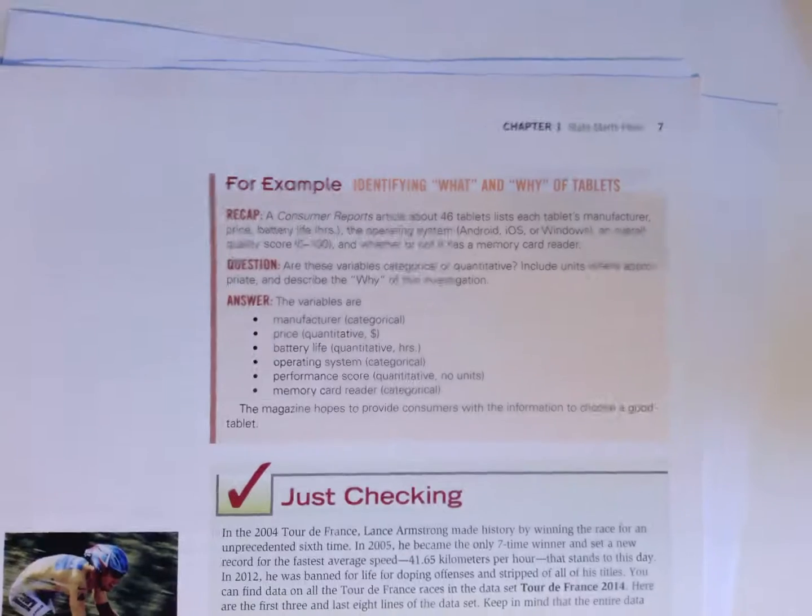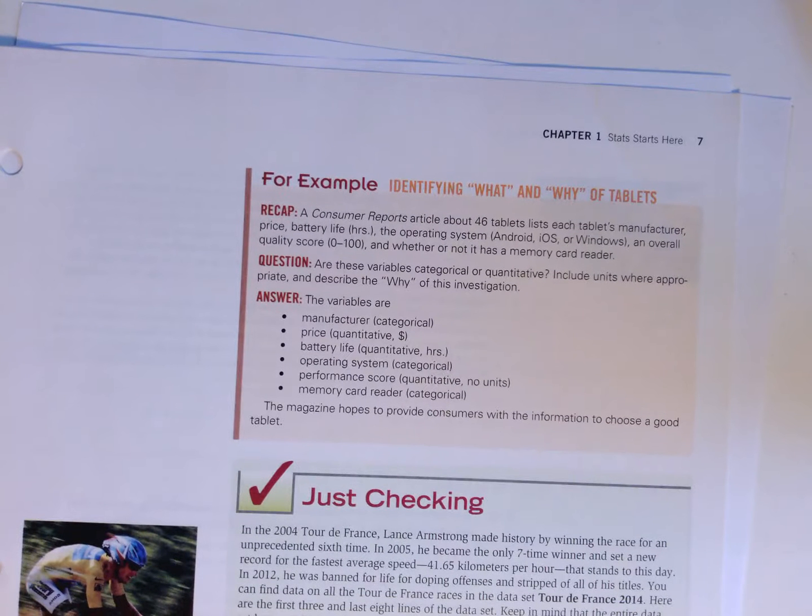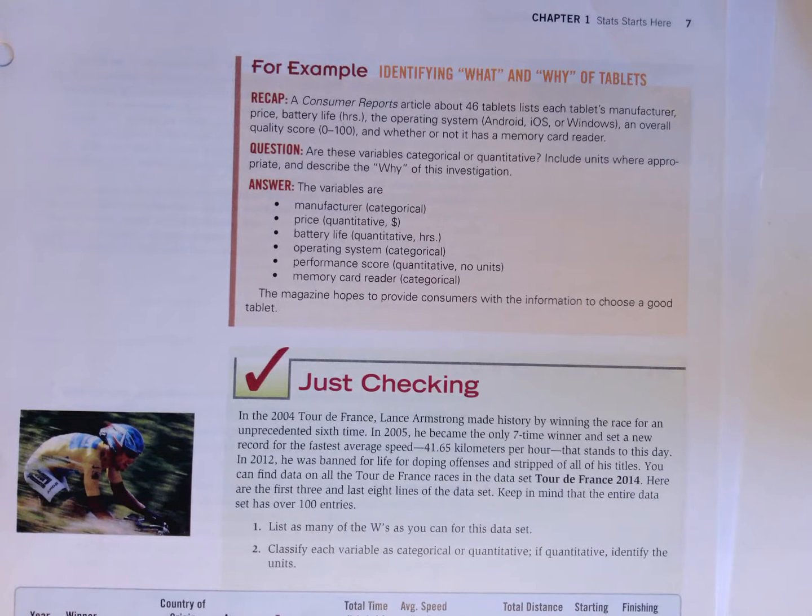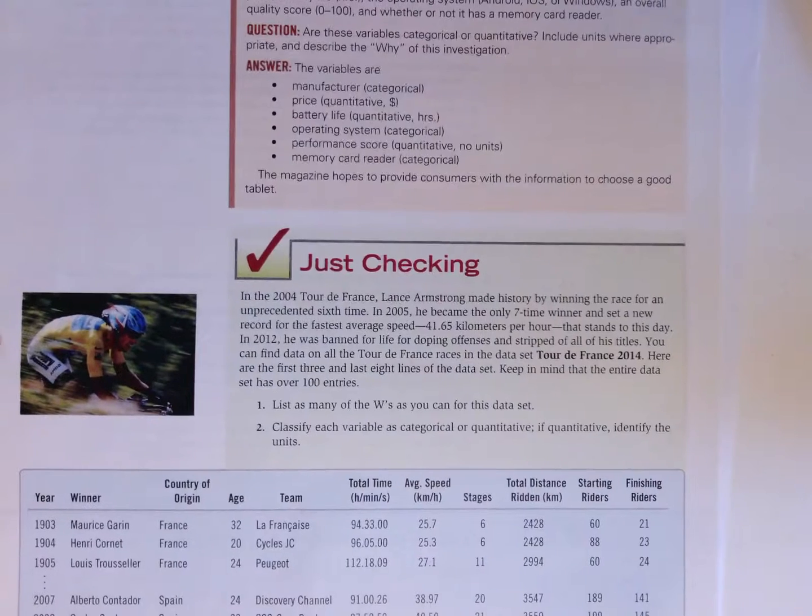Each chapter has some examples in it and it's very helpful to kind of be going through and asking these questions, covering the answer and seeing that those are working. There's also a very useful feature called Just Checking and these answers are provided at the back of the book. So here is looking at some data from the Tour de France, and we have information from 1903 up to 2014.